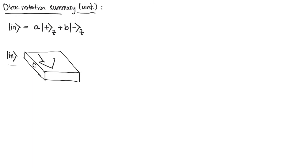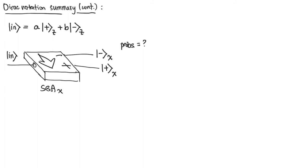Out we come from the SGA-x, and the two possible states in this measurement are plus-x and minus-x. How are we going to find the probability of getting plus-x and minus-x? The probabilities are definitely not |b|² for the minus state and |a|² for the plus state, because we're talking about plus-x and minus-x states, and a and b are the coefficients for the plus-z and minus-z states. So we first have to rewrite the state using the x basis.